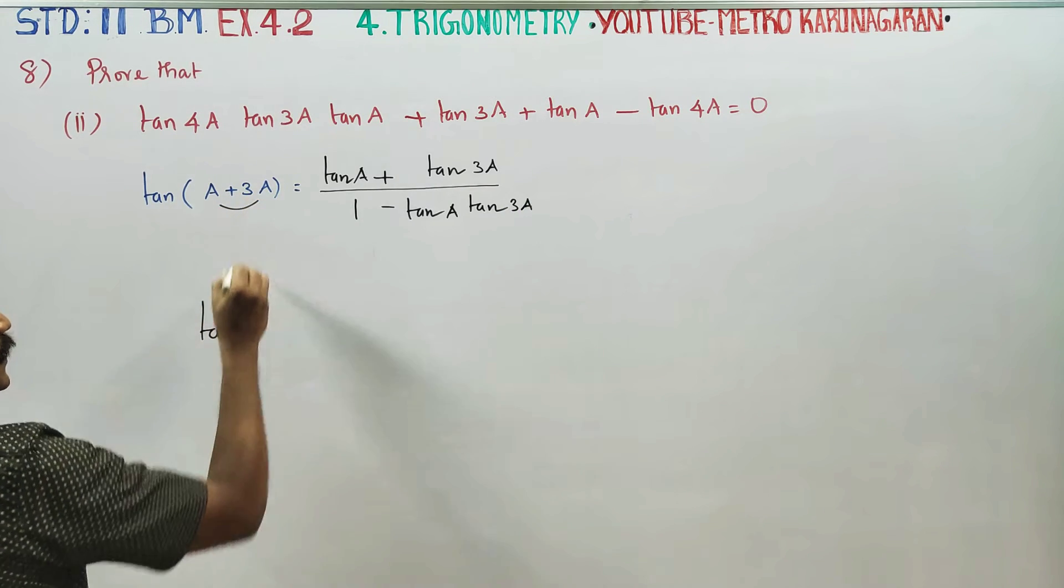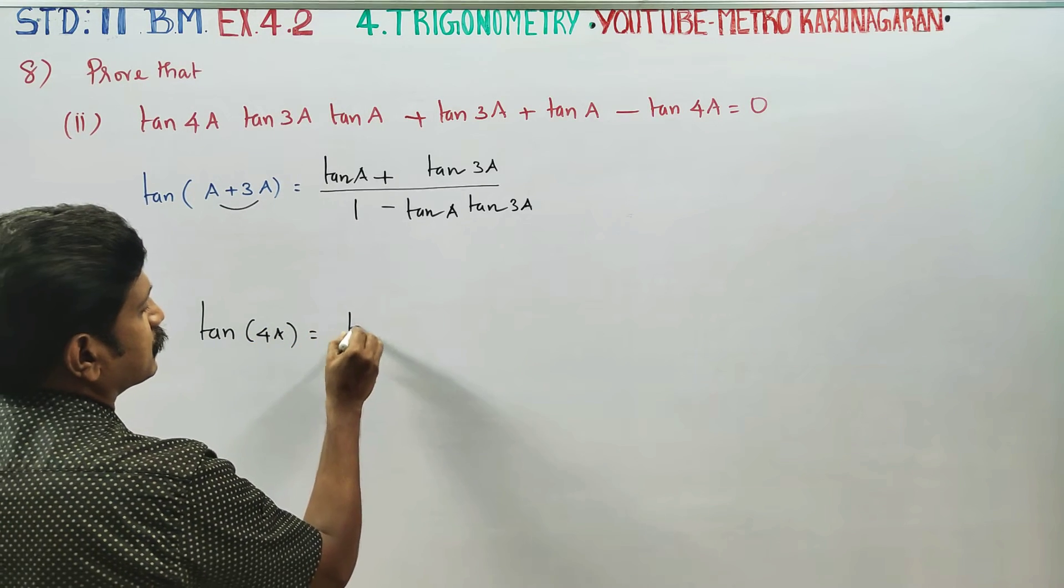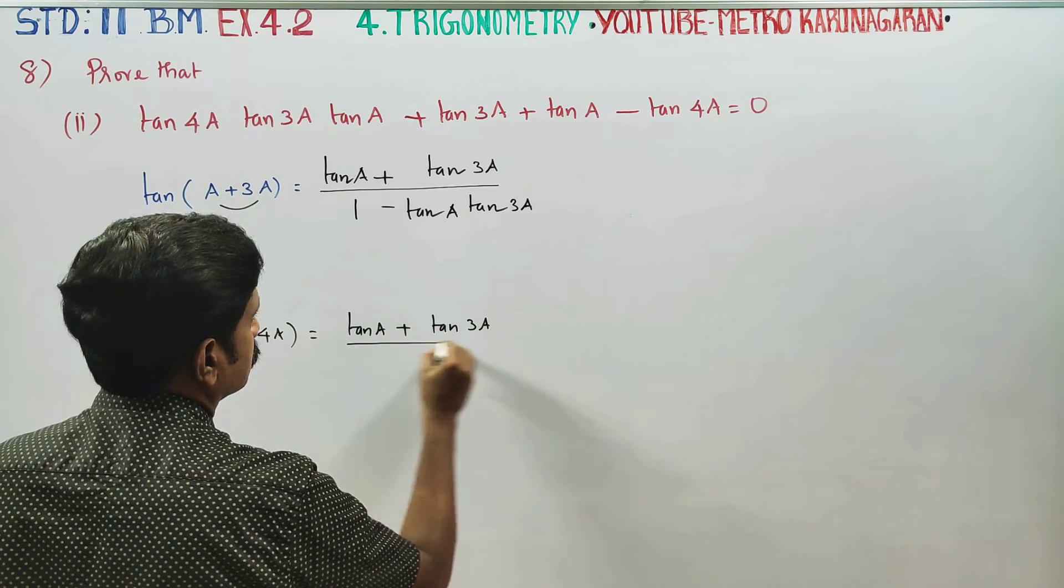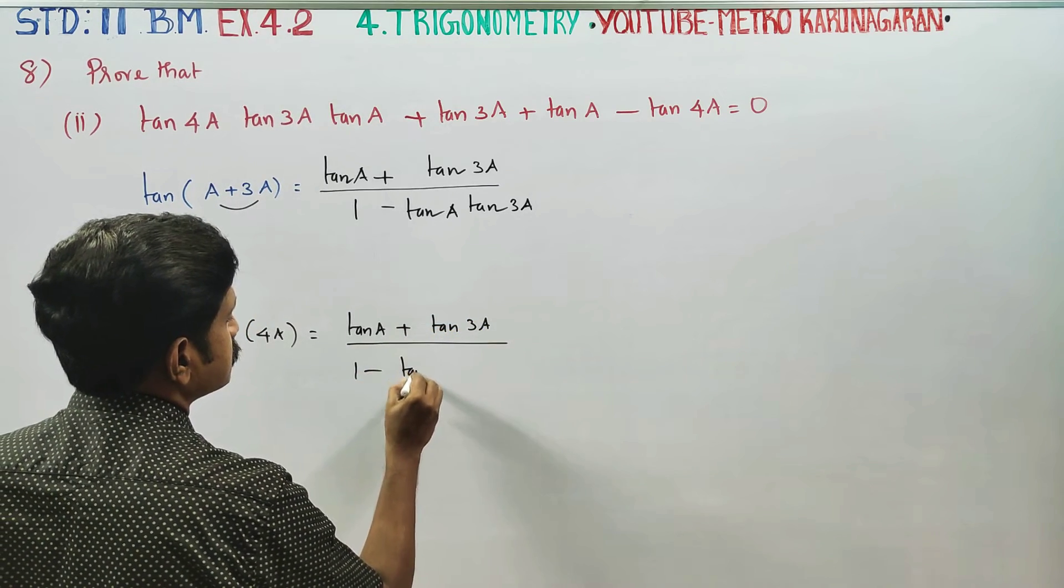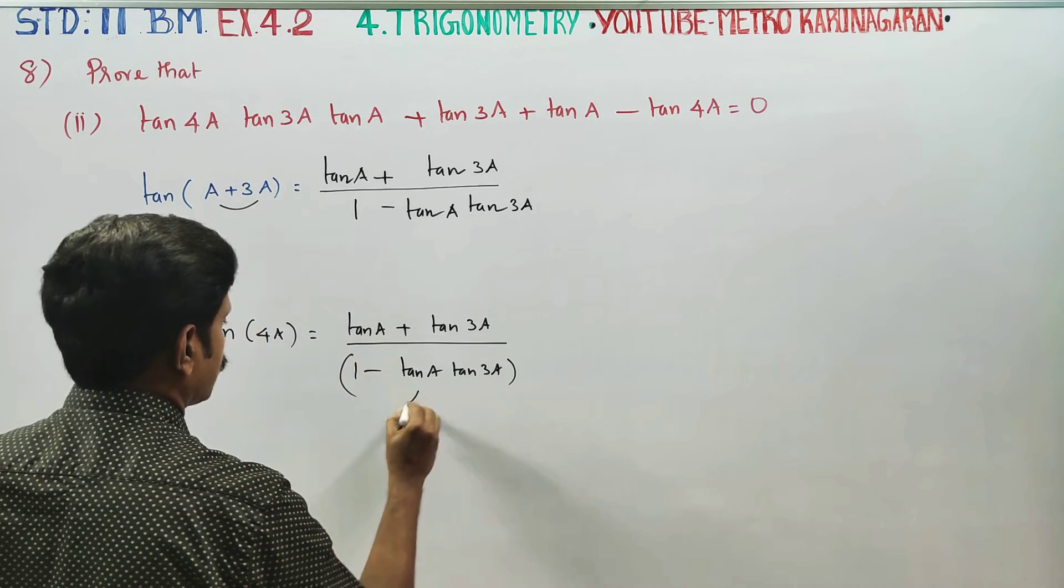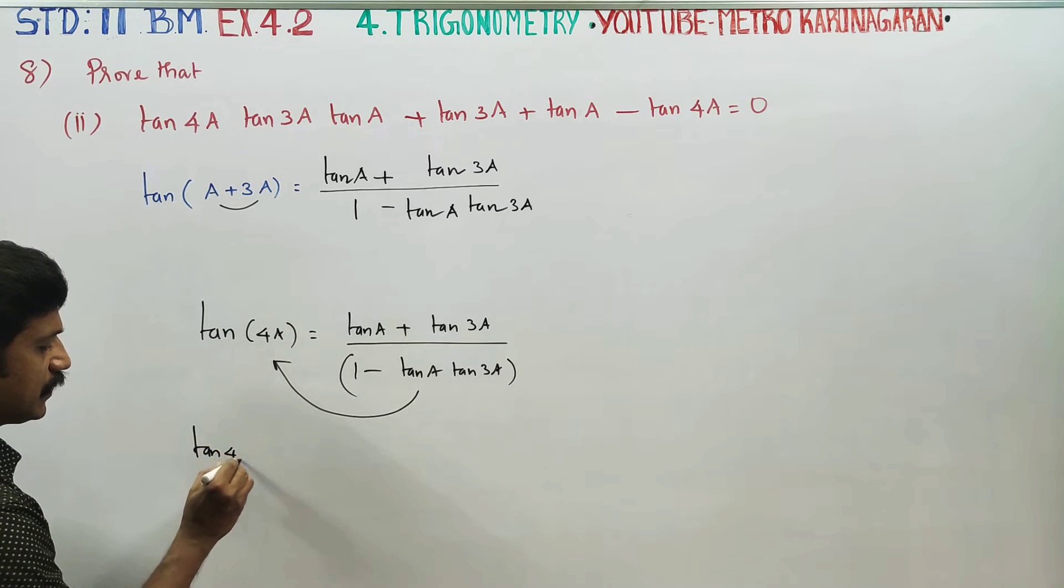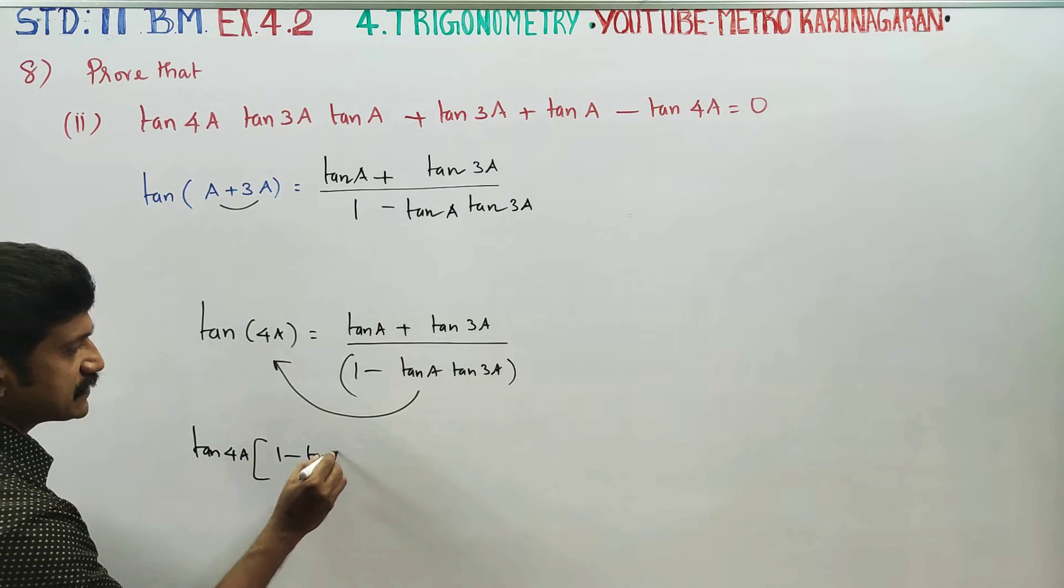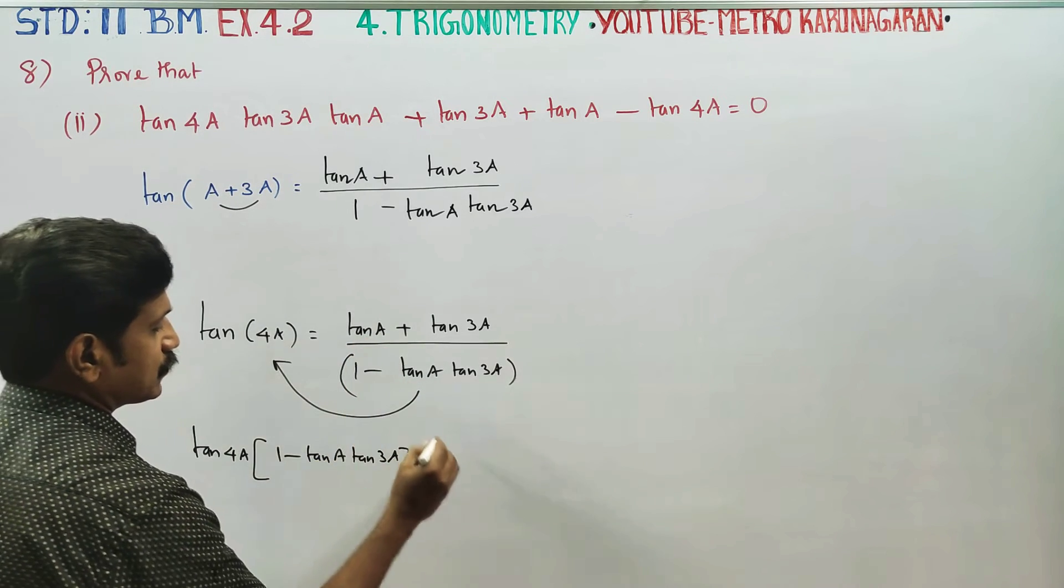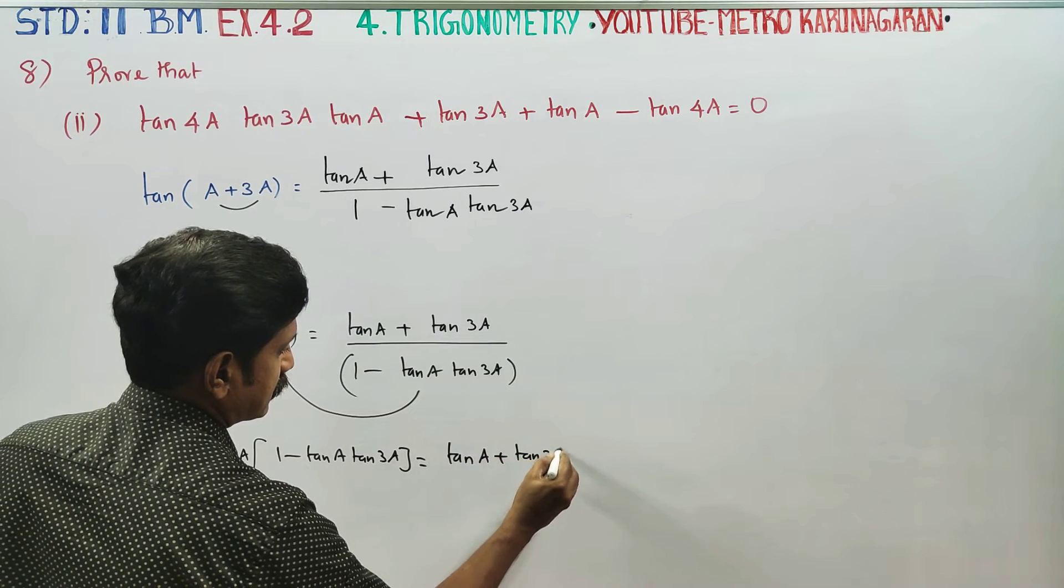Tan 4A is equal to tan A plus tan 3A divided by 1 minus tan A tan 3A. So 1 into tan 4A is equal to tan A plus tan 3A.